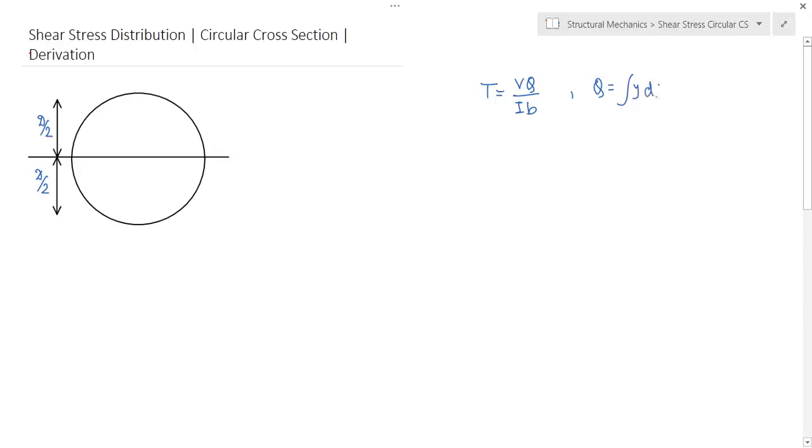The shear stress formula τ equals VQ/(IB), where Q equals ∫y dA. In the previous video I have shown how to draw this distribution diagram for a rectangular beam. For a rectangular beam at a distance of y, we got this area. In that case, the beam was constant throughout the depth of this beam.